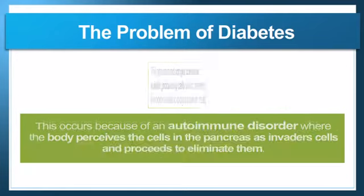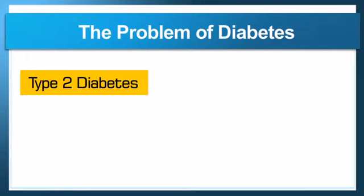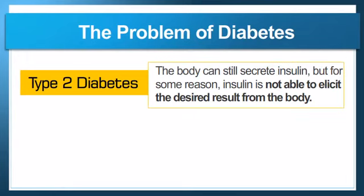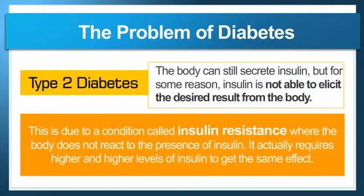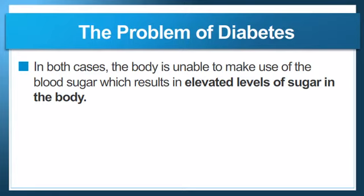Type 2 diabetes, on the other hand, is when the body can still secrete insulin but for some reason the insulin is not able to elicit the desired result. This is due to a condition called insulin resistance, where the body doesn't react to insulin the way it used to — it actually requires higher and higher levels of insulin to get the same effect.